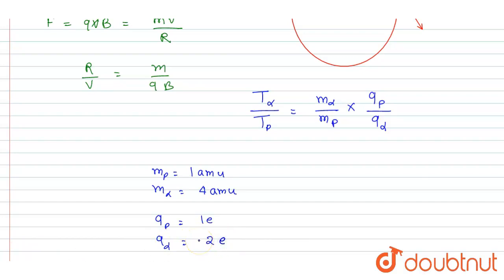You can see the ratio: mass ratio is 4, I will put here it is 4. And qp by qα, it is half, so it will be 2.